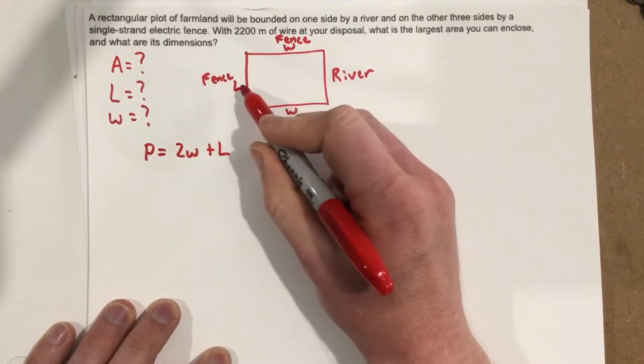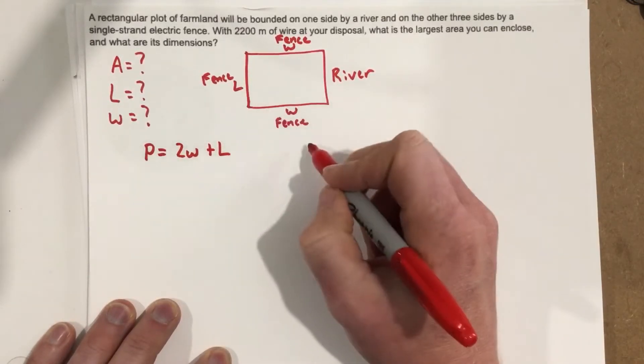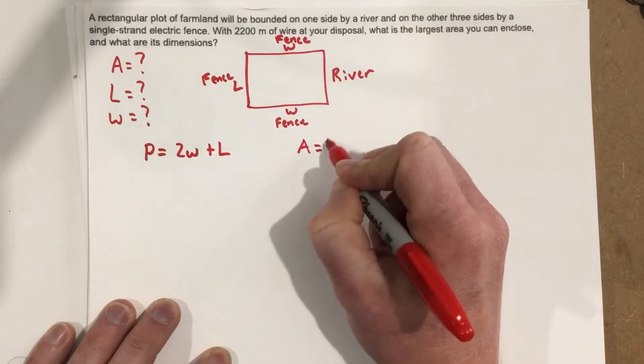The area of this is obviously length times width, so area is going to equal length times width.